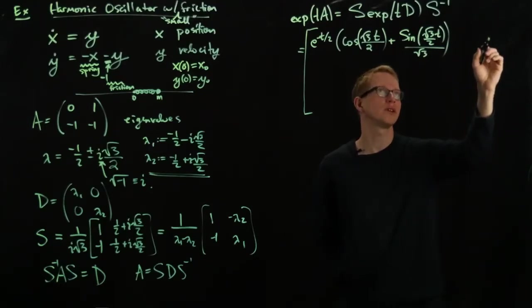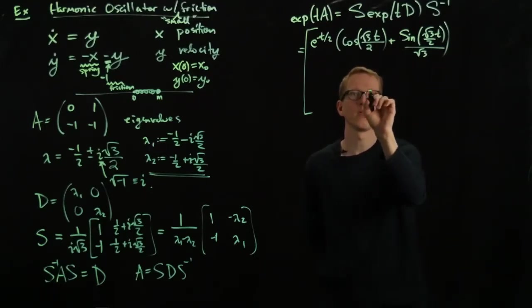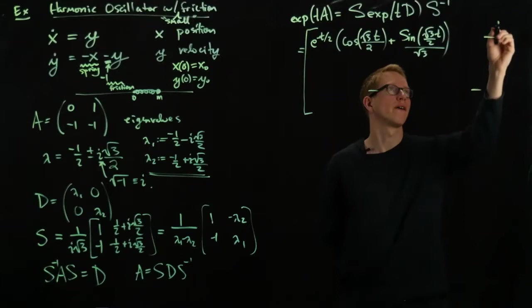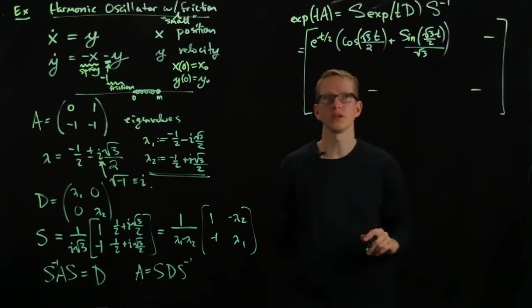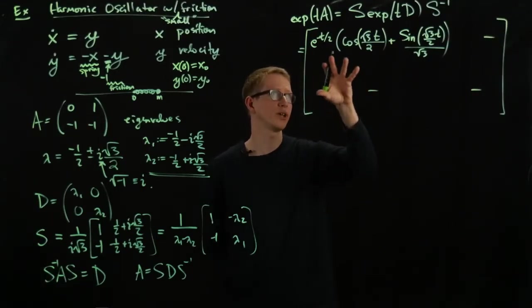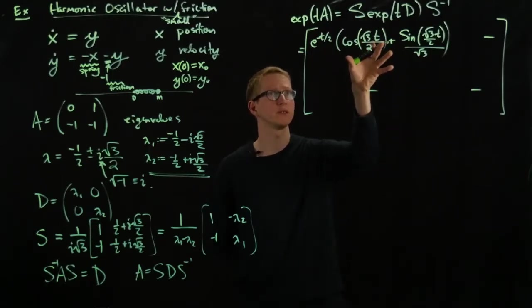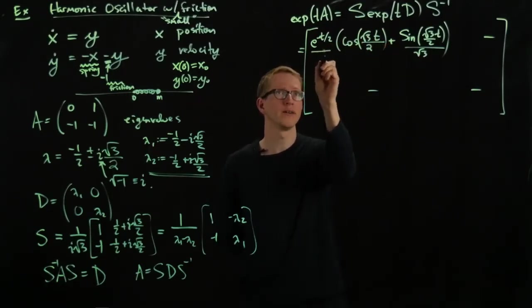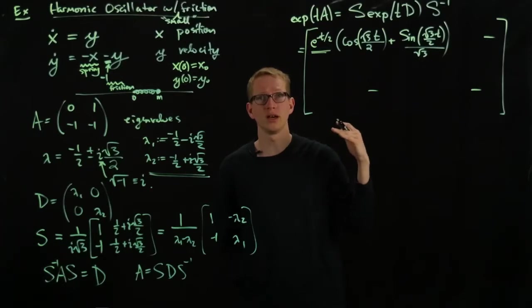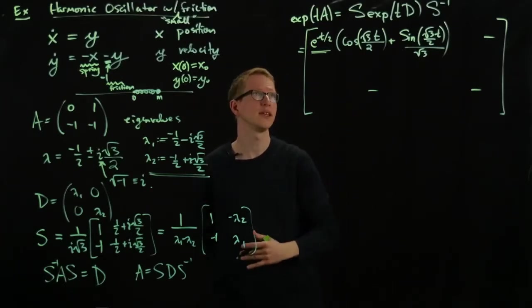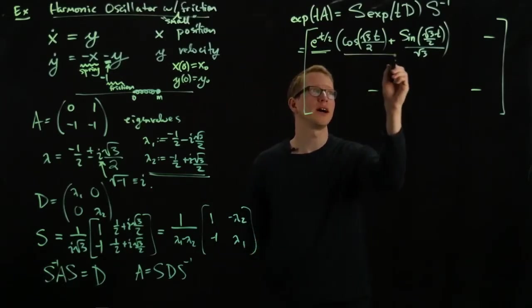Plus sine root 3 over 2 T over root 3. And you know what? I'm not even going to write the other terms because I'm only going to focus on one of them for now. So you get a matrix and the first term in this matrix looks like this. You have an exponential damping, a decrease in the amplitude, and an oscillation term.